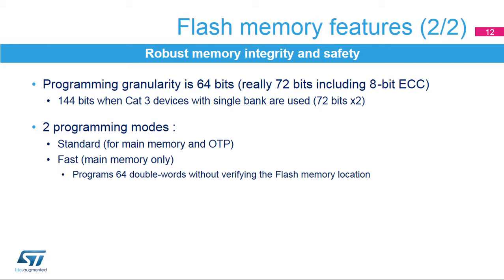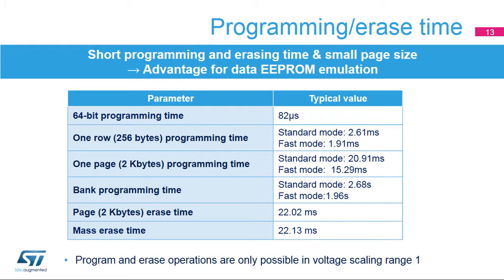Fast programming enables programming of a row of 256 bytes, while normal programming has a granularity of 8 bytes. The main purpose of fast programming is to reduce the page programming time, achieved by eliminating the need to verify flash memory locations before they are programmed, thus saving the time of high-voltage ramping and folding for each double word. Fast programming is one-third faster than standard mode. Mass erase time for a 512-kilobyte erase approximately takes the same time as a page erase.